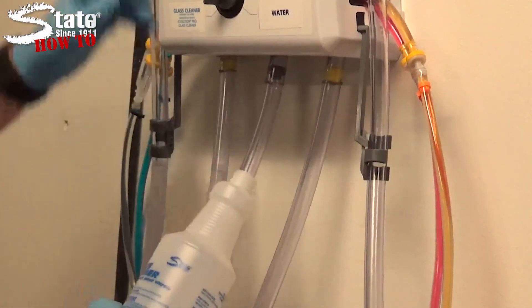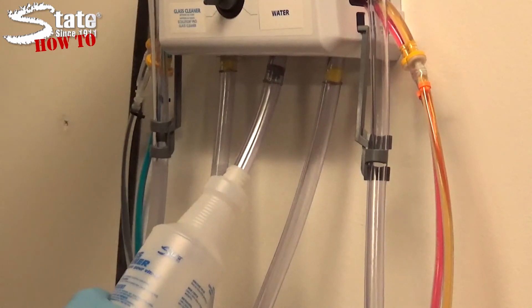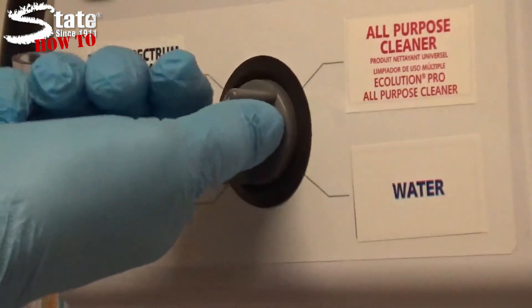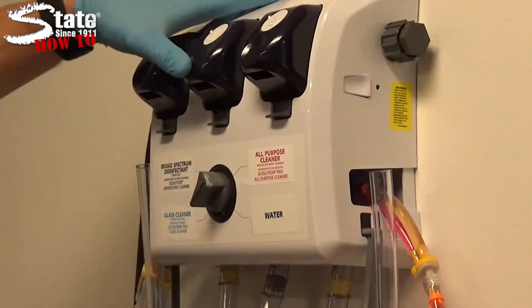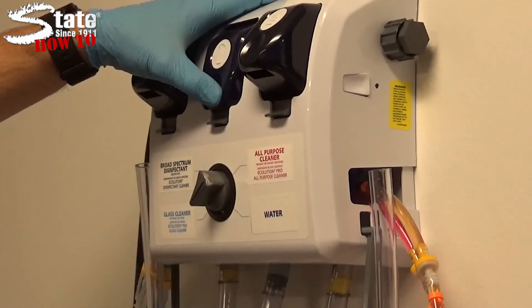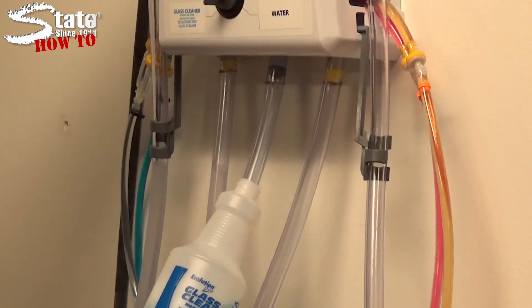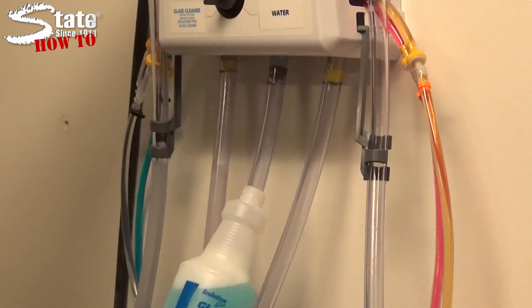First, to fill a quart bottle, insert the short quart bottle fill hose into your quart bottle after selecting the desired chemical you would like to dispense with the selector knob. Press and hold the middle button to fill the spray bottle. Release the button when the bottle is three-quarter full of diluted chemical.